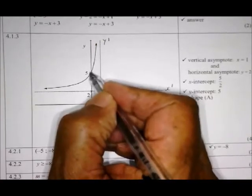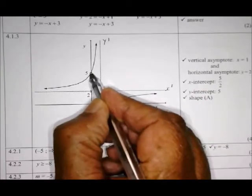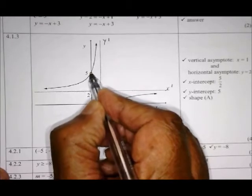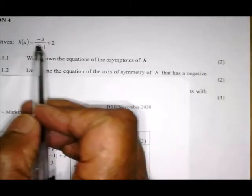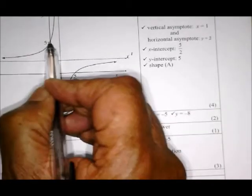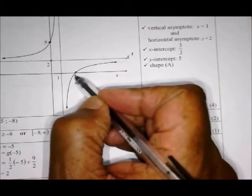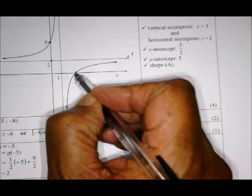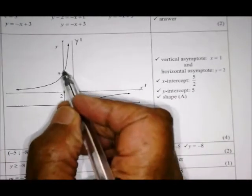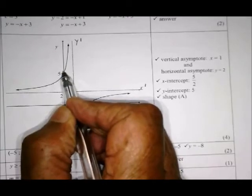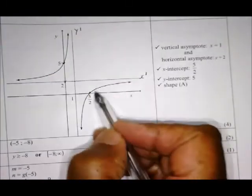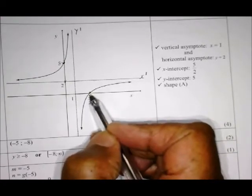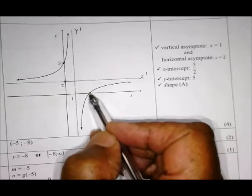The axis of symmetry of f intersects the x-axis at E. Line g goes through point D which is (m, n). C is where the two graphs intersect. For 4.2.1, write down the coordinates of A. It comes straight from the equation: A is (-5, -8).